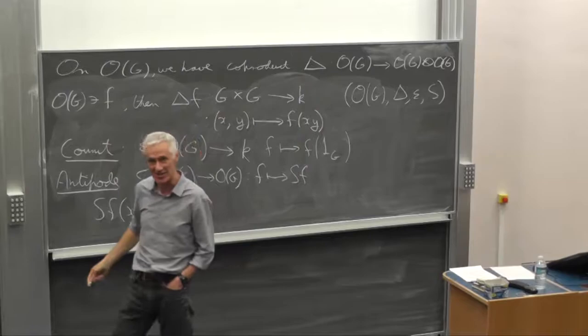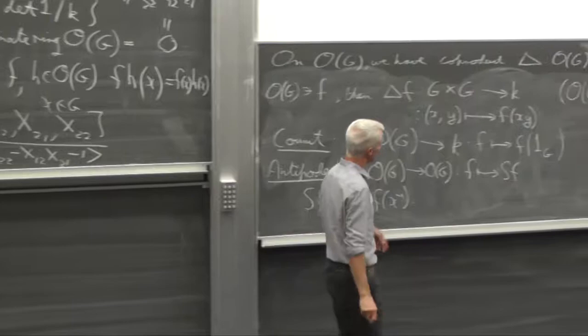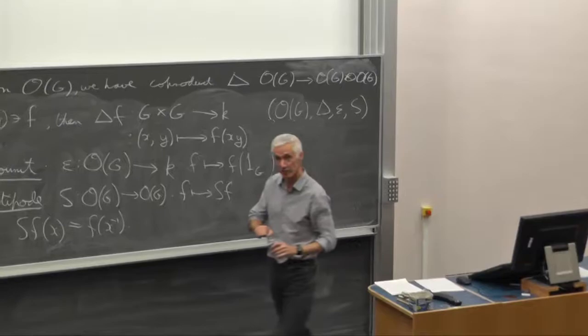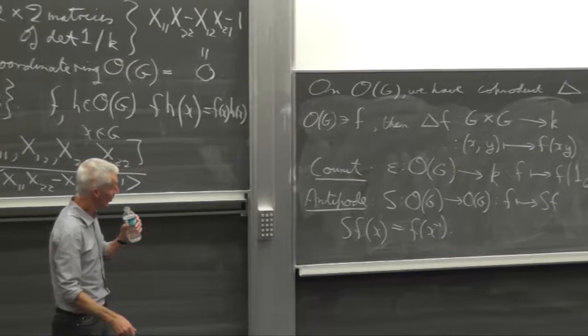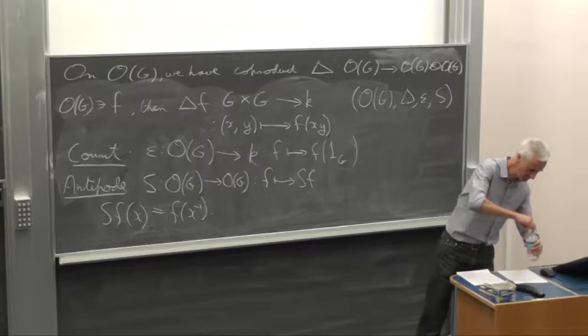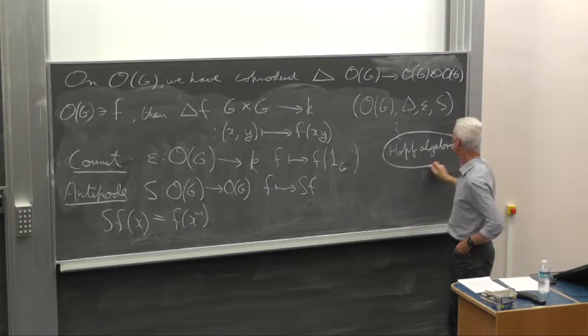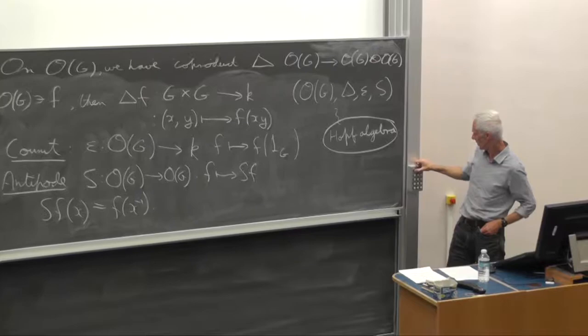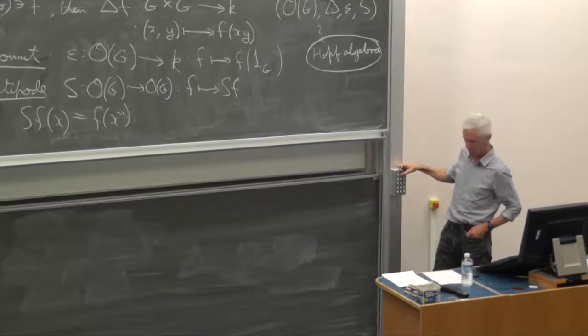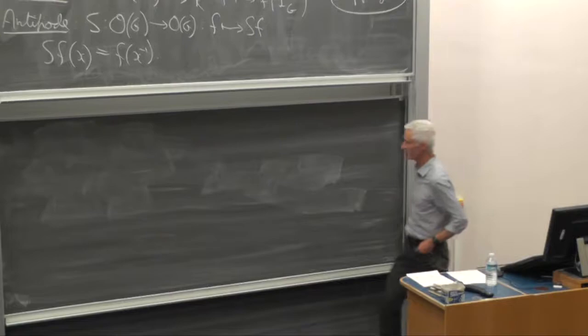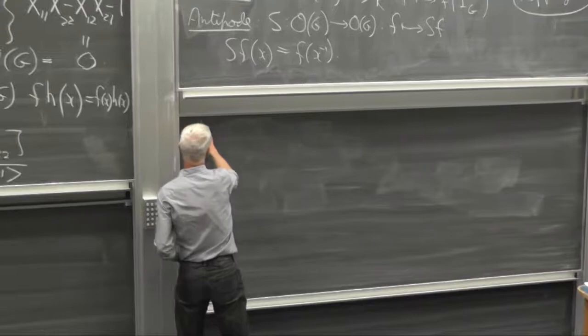There are similar things to remember the unit of the group, and that's a map epsilon from OG to K which just evaluates at the identity. And the other thing we need to remember is the inverse of a group. That is done using the antipode, which is a map S from OG to OG, and S is by definition F of X inverse. So all this stuff - OG, delta, epsilon, and S - satisfies some axioms which are kind of messy to write down. There's an axiom of coassociativity and a number of other axioms.